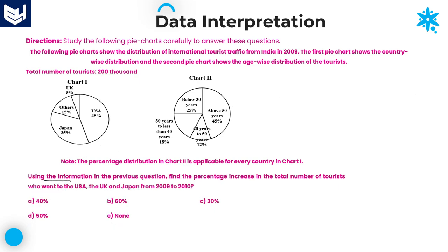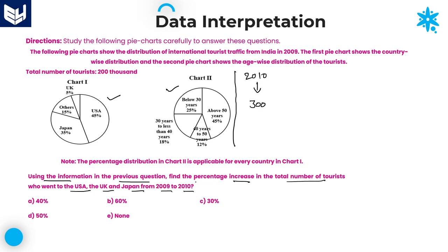Next question: use the information from the previous question — in 2010 the total value becomes 300,000, that is the only additional information. Charts 1 and 2 percentages and countries are the same. The question asks: find the percentage increase in total number of tourists who went to USA, UK, and Japan from 2009 to 2010. In 2009: USA + UK + Japan means except others — that is 85% of 200,000.